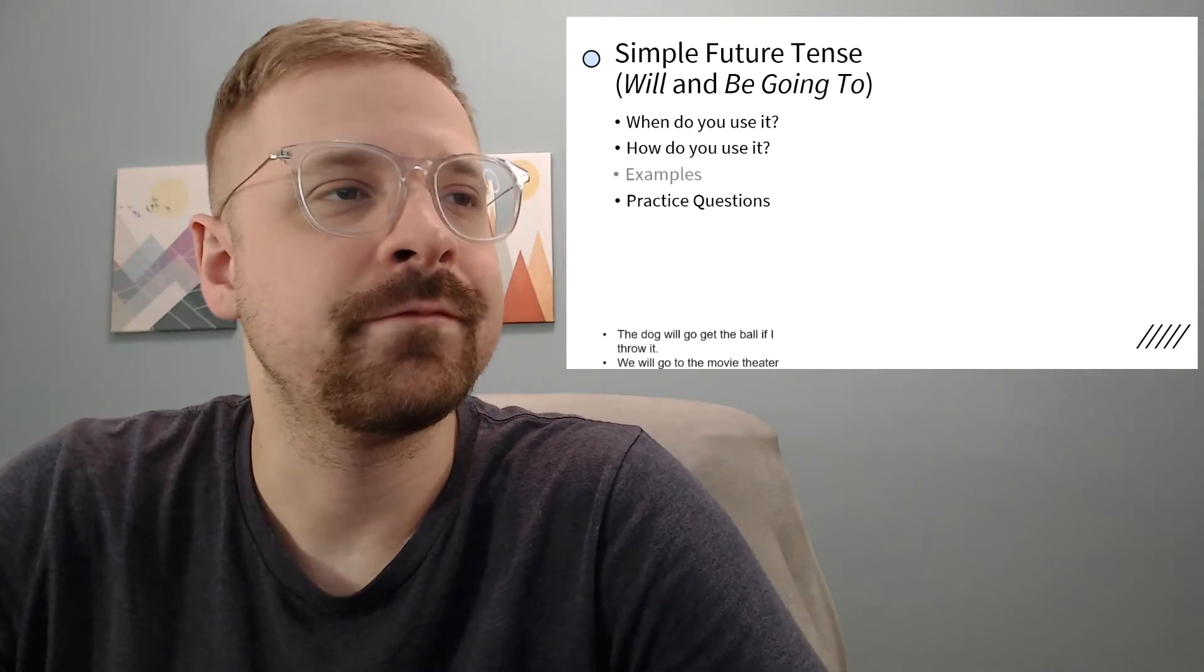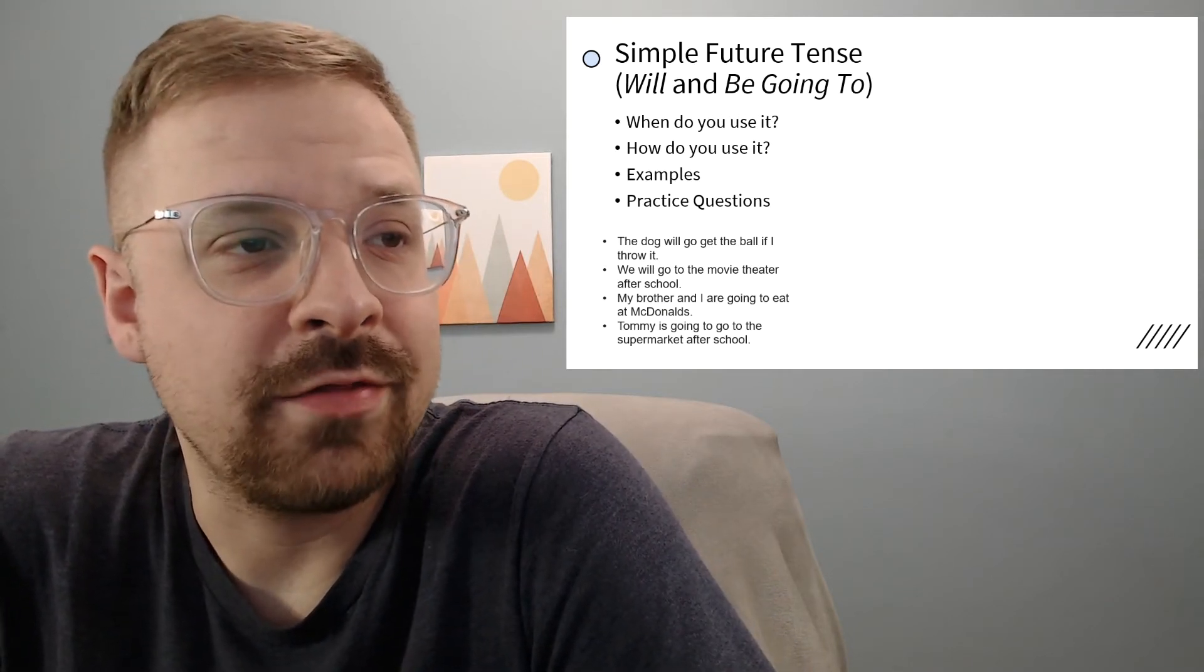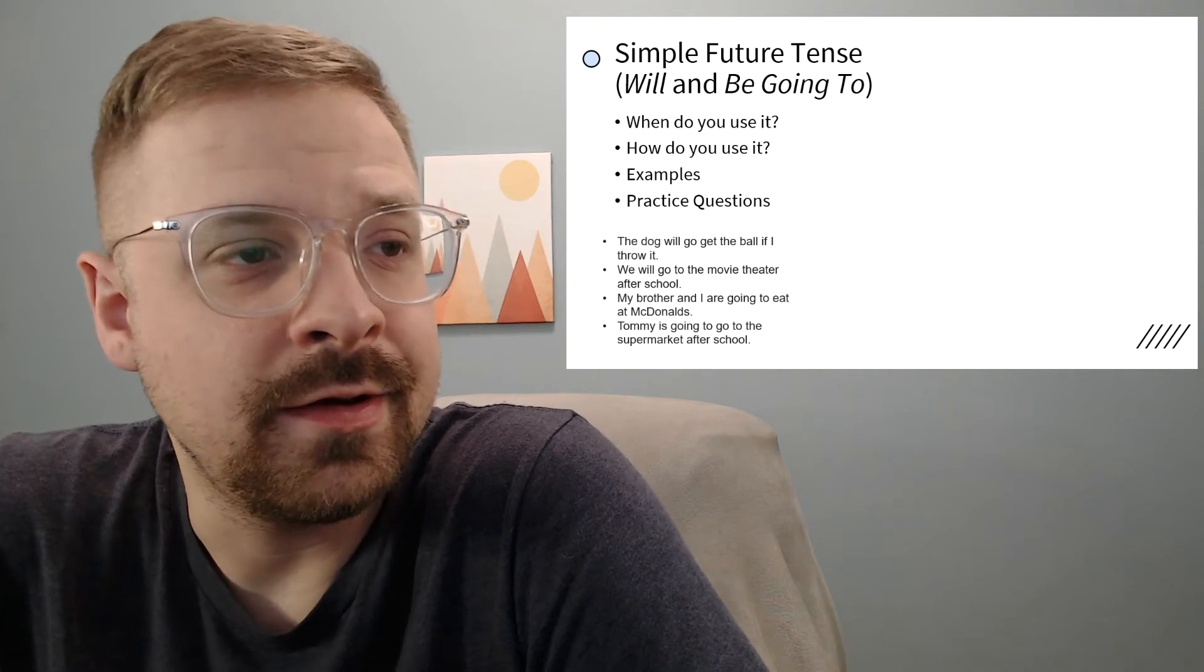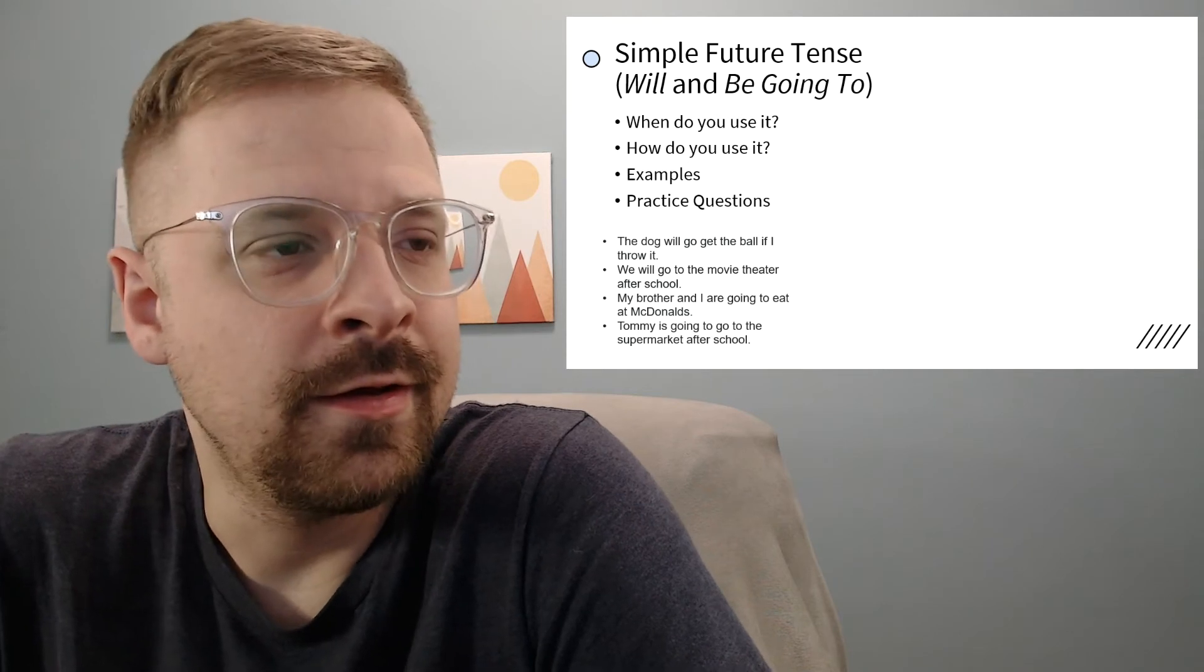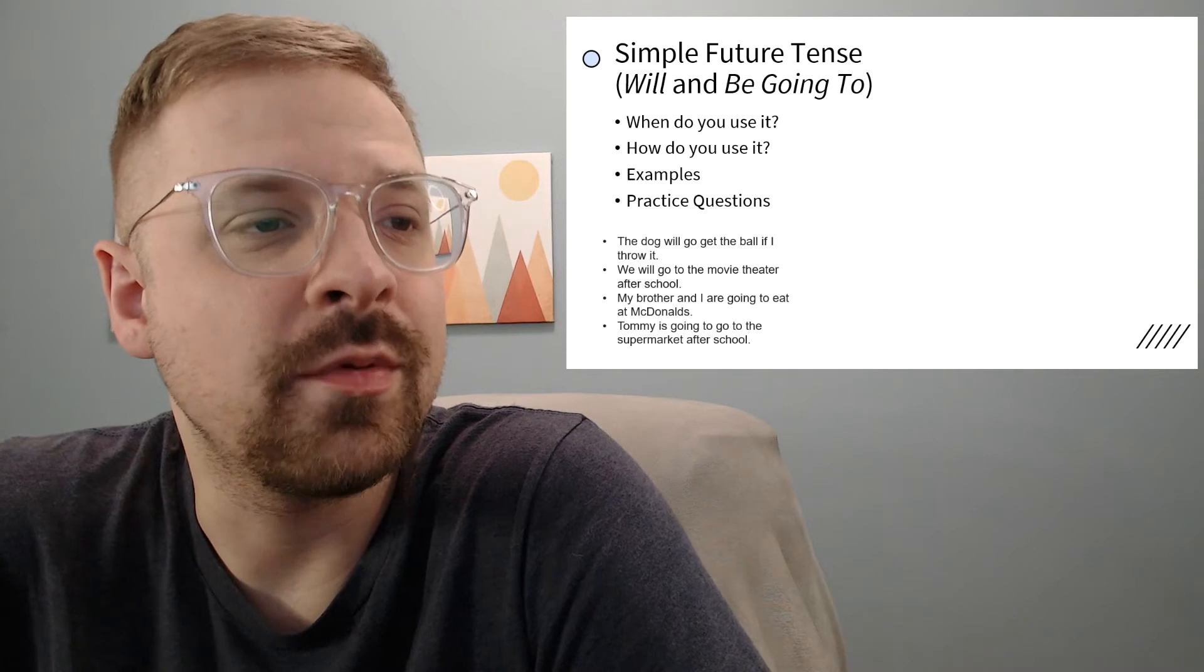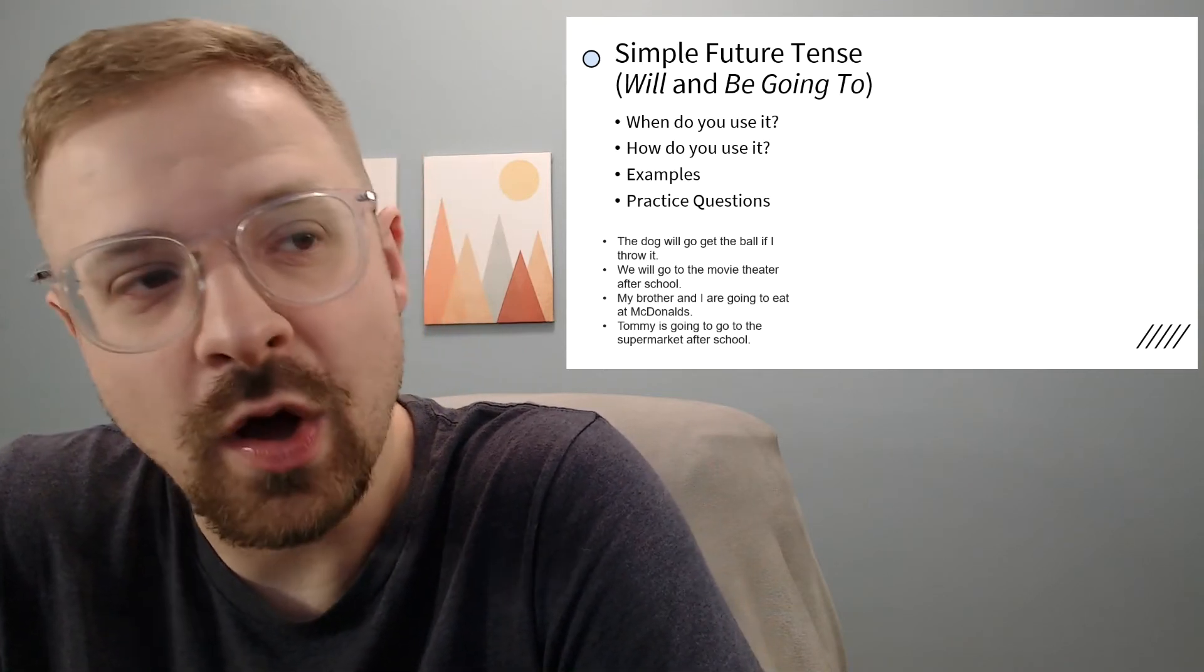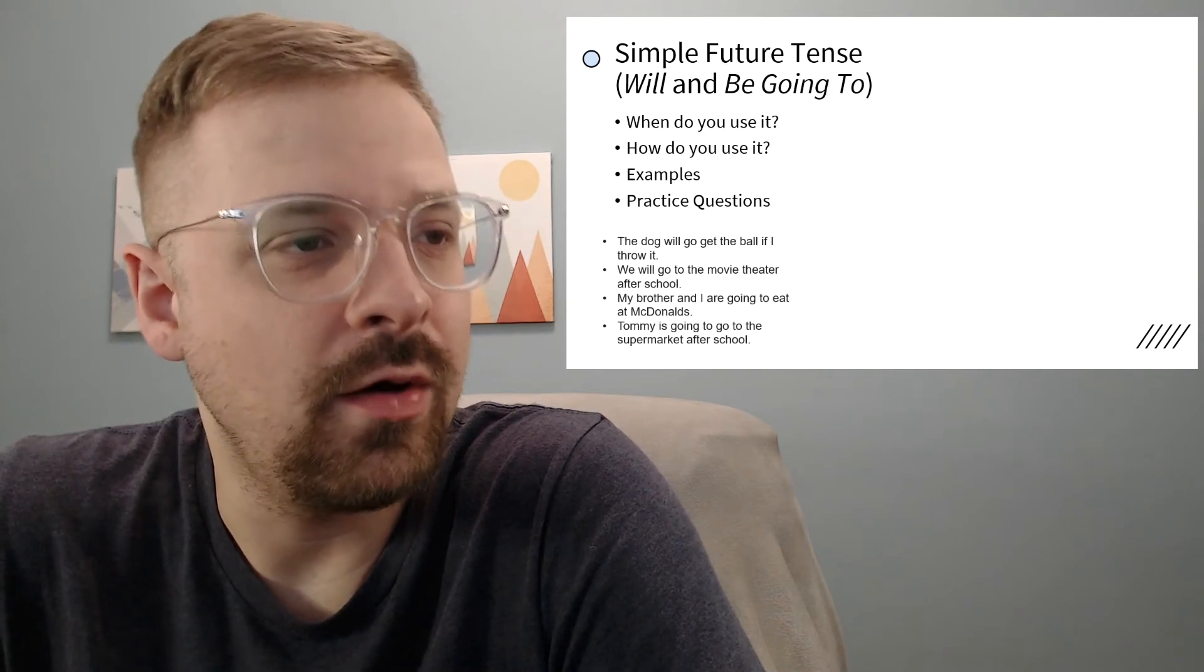Let's look at some examples. Number one: the dog will go get the ball if I throw it. Number two: we will go to the movie theater after school. Number three: my brother and I are going to eat at McDonald's. Number four: Tommy is going to go to the supermarket after school. Of these, the first two are 'will' sentences - the dog will go, we will go - and we have the 'be going to' below: my brother and I are going to eat, Tommy is going to go.